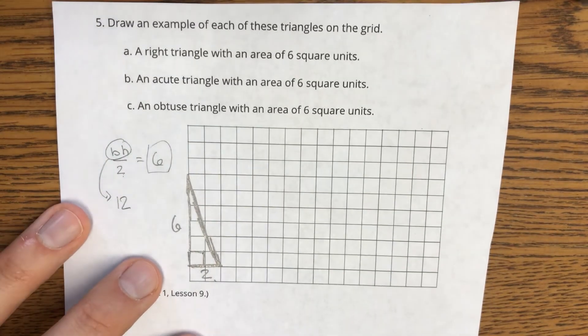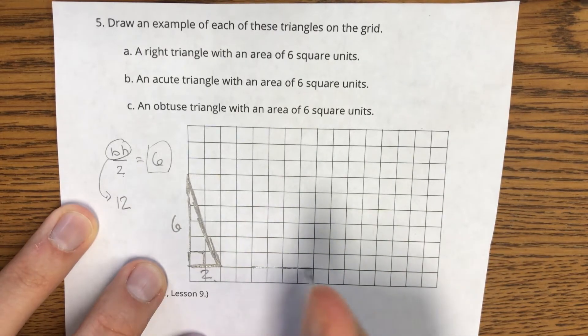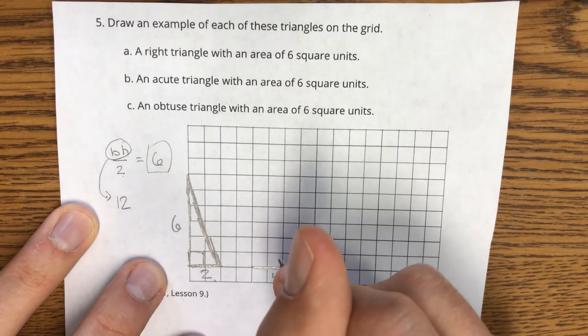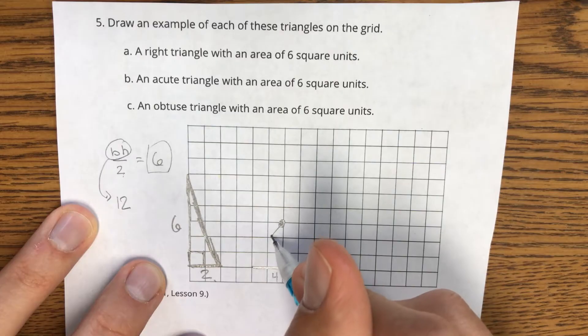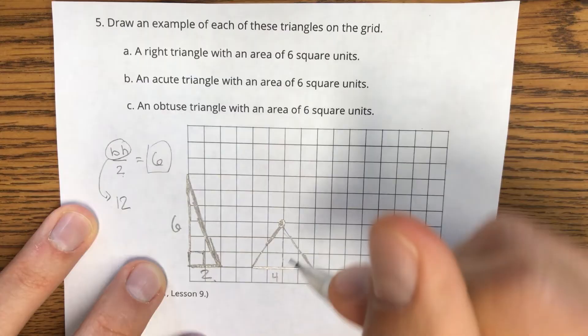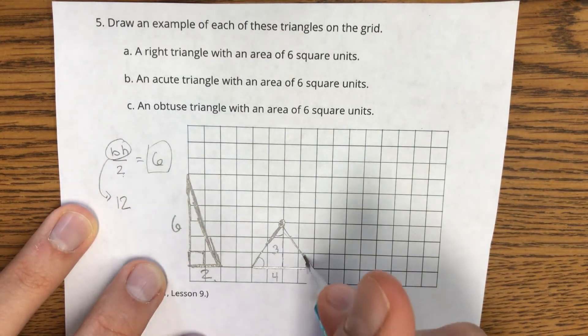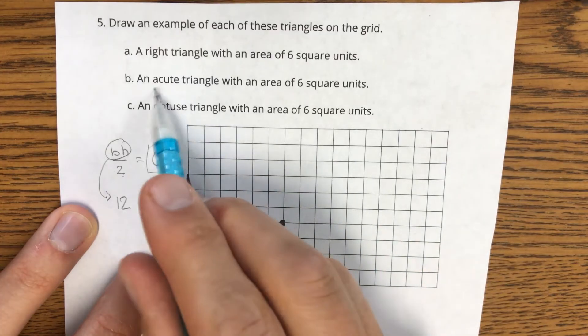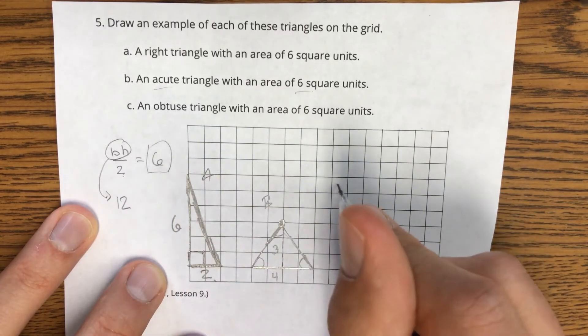Now an acute triangle. Well, what if I do a base of four this time? One, two, three, four along this bottom side here. That means I need to go up three because four times three is 12. Well, if I go straight up here three units, when I connect these together, four times three is that 12 divided by two is six. And all three of these angles are less than 90. So they are acute and they do have an area of six. So there was A, here's B, and now it's time for C.